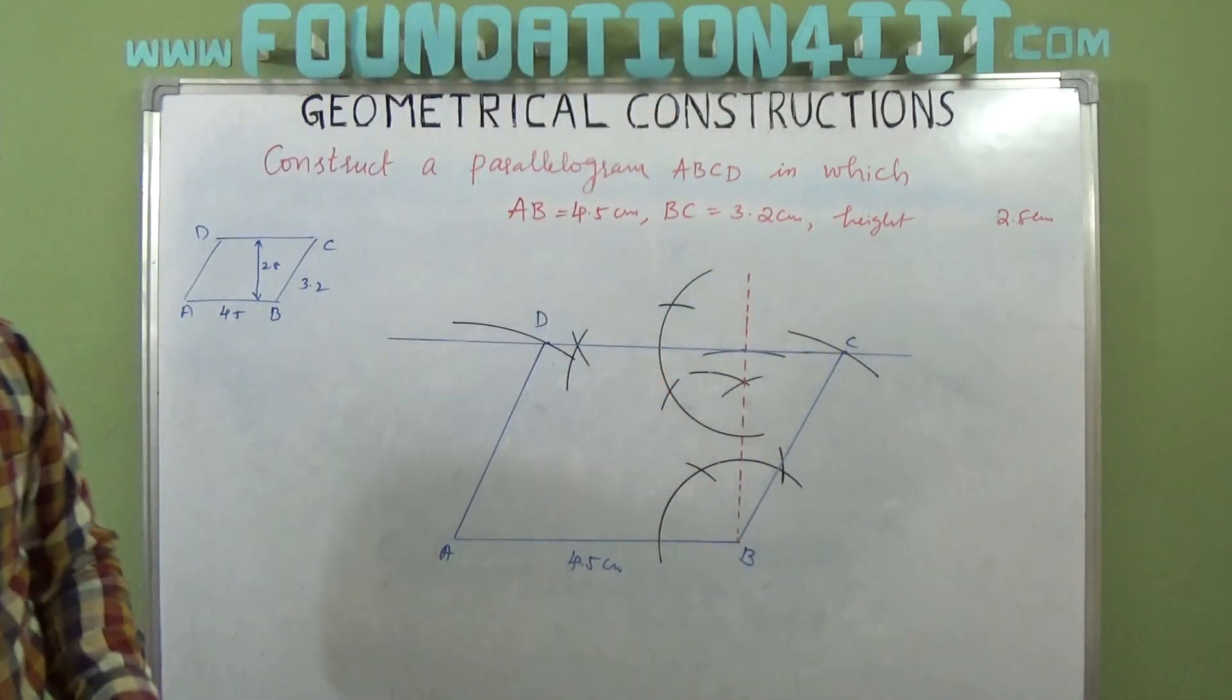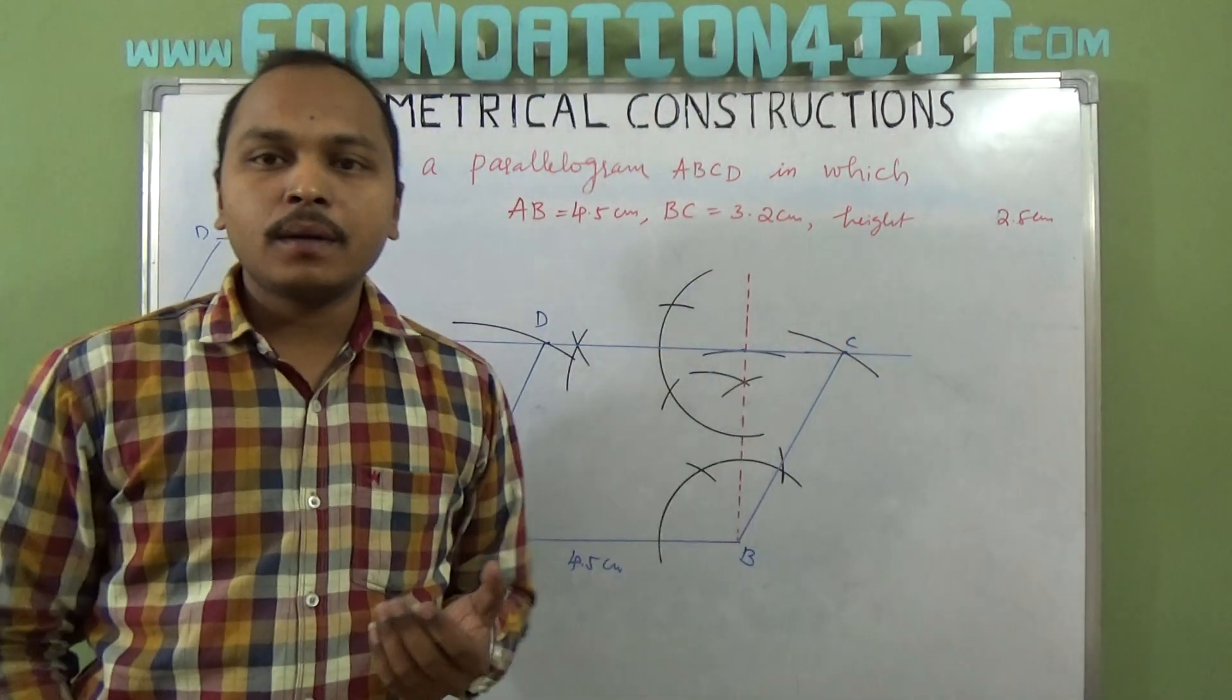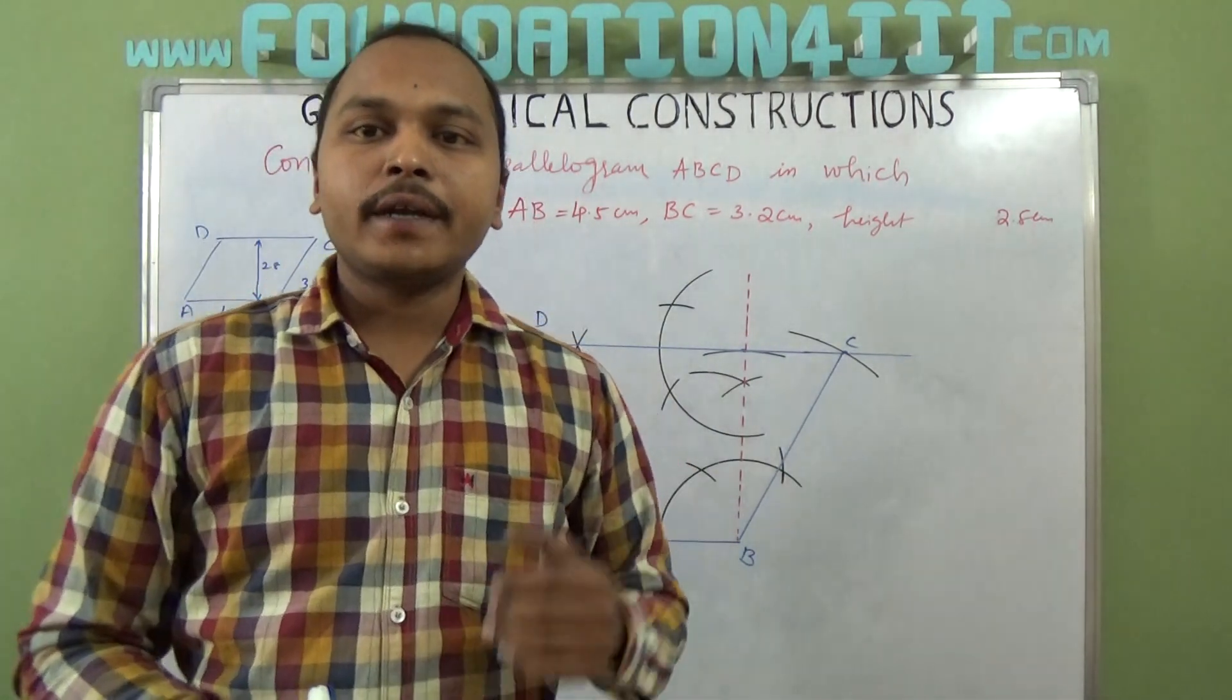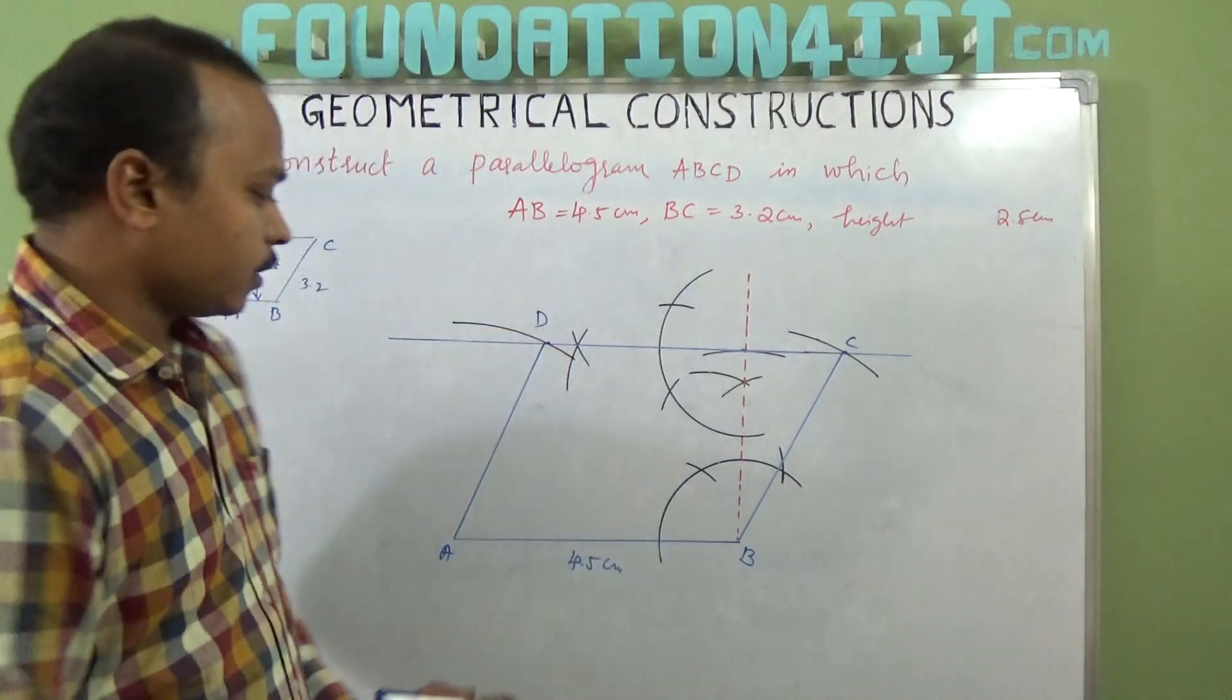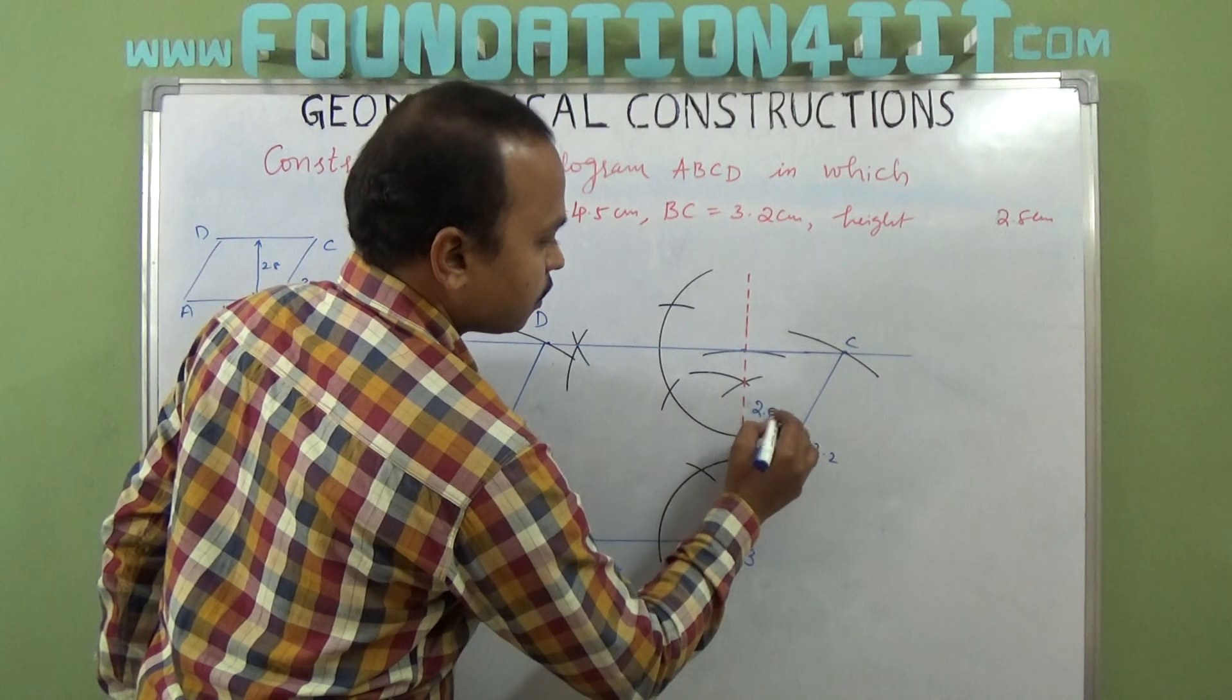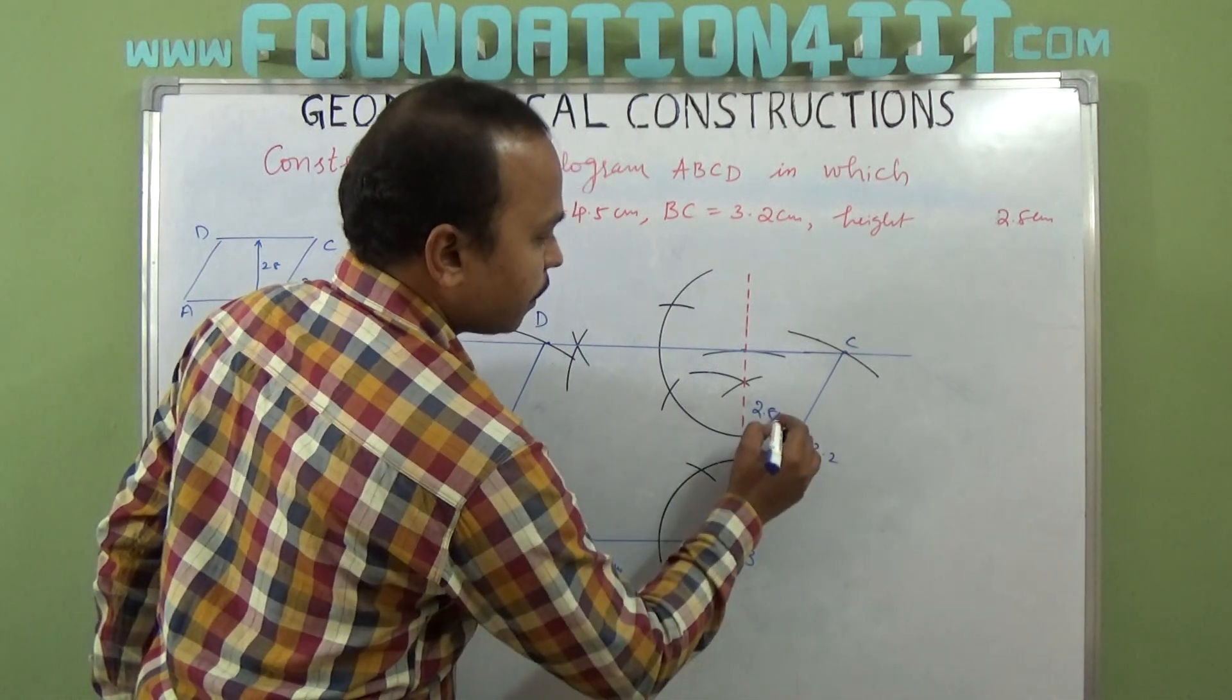Just join that. ABCD is a parallelogram with two adjacent sides and height given. So you can write this - BC is 3.2, and here this height is 2.8 centimeters. Height is always perpendicular.